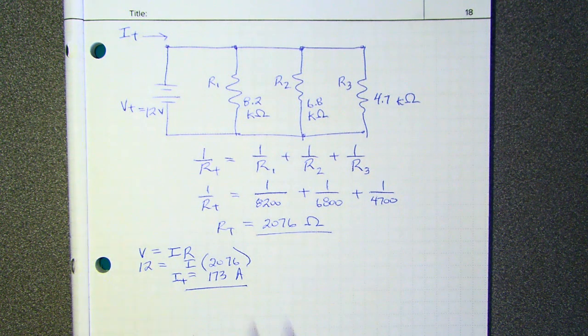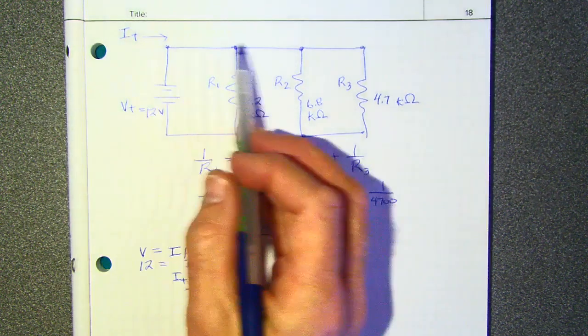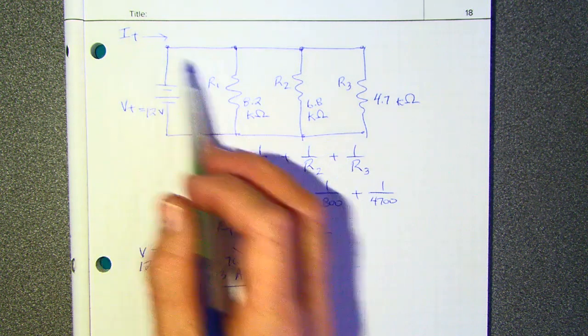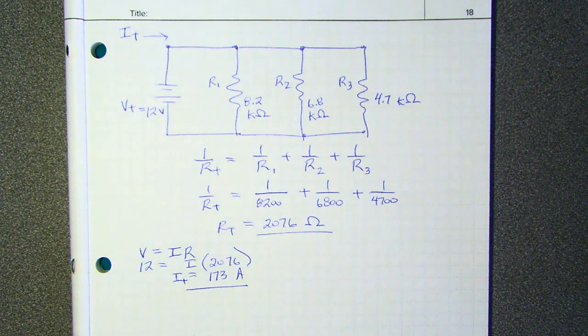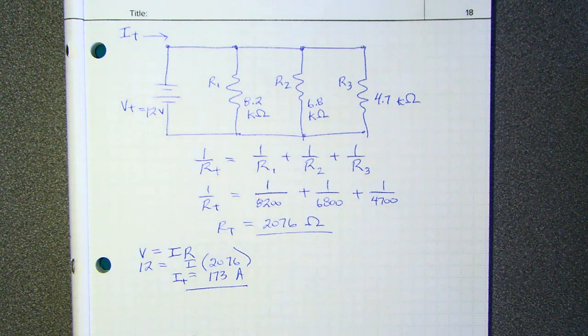And the reason is that the current in a series circuit is going to be the same everywhere in the circuit. The current in a series circuit is going to be the same everywhere in the circuit. But this is not a series circuit. This is not a series circuit, so it doesn't behave the same way.